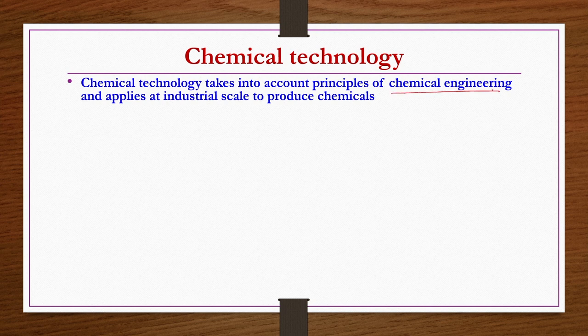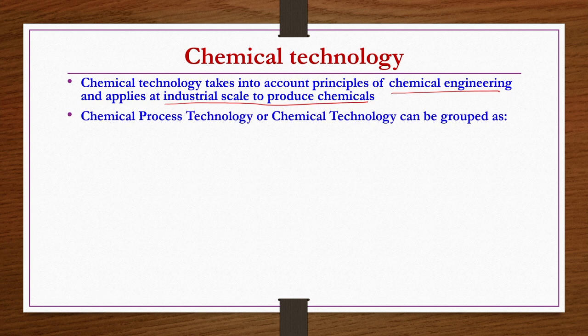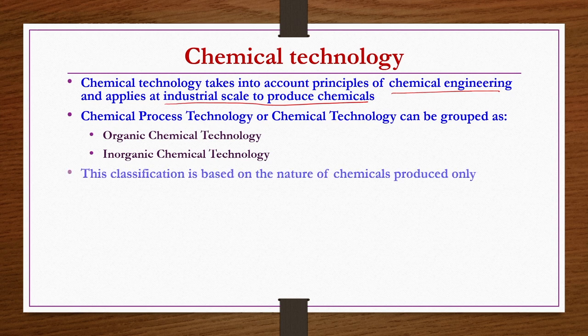It is essential to understand what chemical technology is, since we are going to discuss organic chemical technology. Chemical technology takes into account principles of chemical engineering — studied at UG level through core and elective courses — and applies them at industrial scale to produce different types of chemicals. Based on the nature of the chemical being produced, whether inorganic or organic, chemical technology may be grouped as organic chemical technology or inorganic chemical technology.